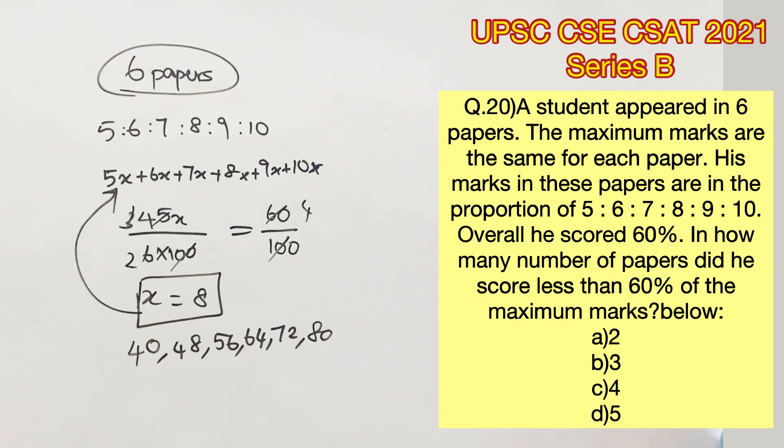We need to find out the number of papers in which he has scored less than 60%. Since we have taken the maximum marks of each paper as 100, we can directly count the papers in which the value is less than 60. There are 3 papers, therefore option B is the right answer.